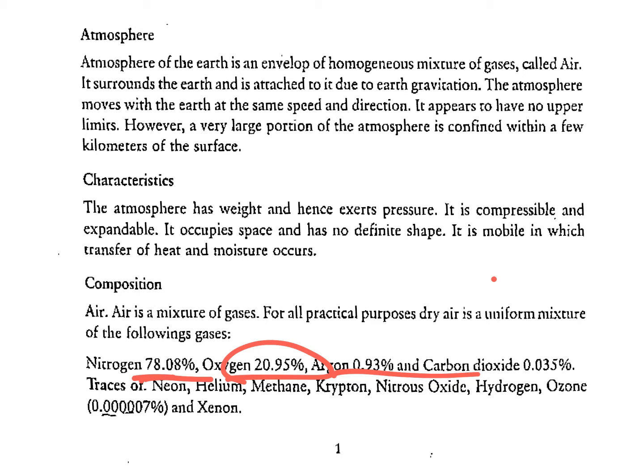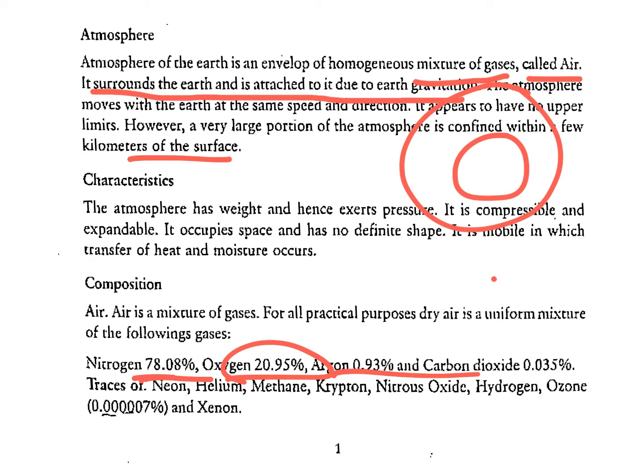Welcome to the first class of meteorology and the first chapter of IC Joshi: Atmosphere. Atmosphere is the Earth's envelope of a homogeneous mixture of gases called air. It surrounds the Earth and moves with the Earth at the same speed and direction. It appears to have no upper limit, however a very large portion of the atmosphere is confined within a few kilometers of the surface.